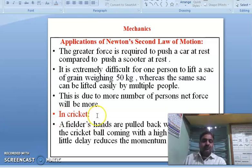Next one, in cricket, you know, a fielder's hand pulled back when, while catching the cricket ball coming with high speed. Why pulled back? If a fielder is not going to pull back the hands, then what happens? Impact of the ball will be more on his hands and there is a possibility of losing the catch. It means hands are pulled back to reduce the impact of the ball.